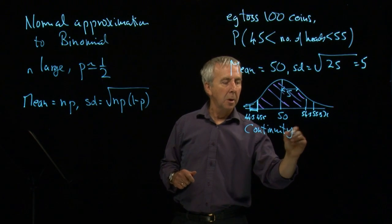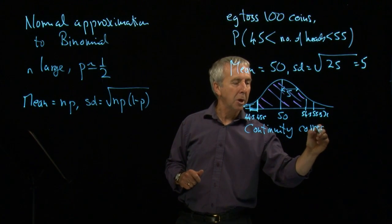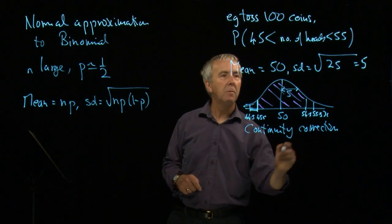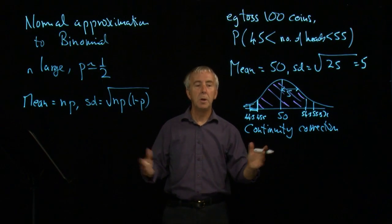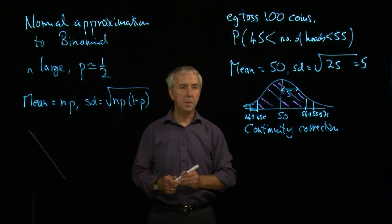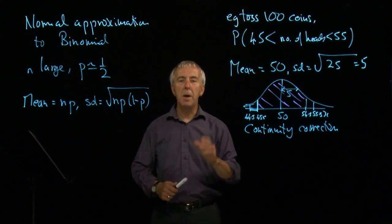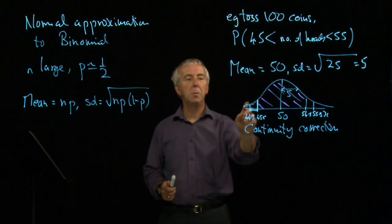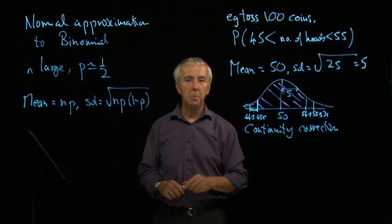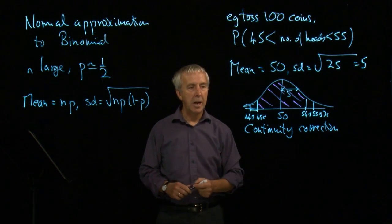This is called the continuity correction. And it's because we're going from a discrete variable, 45, 46, 47, to a continuous variable. In many cases, it won't make a great deal of difference if you put the 0.5 on or not. But we'll do it to be as accurate as possible.